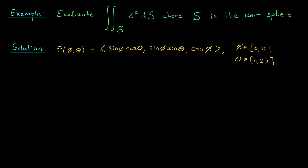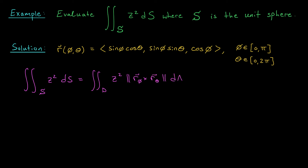According to our definition, this surface integral of z² over S is given by the double integral over all possible values of our parameters φ and θ, of our function z² times the norm of r_φ cross r_θ, dA. I can't compute this integral until I know this norm, so we need to differentiate the parametrization with respect to φ and θ, compute the cross product, and compute the norm of that cross product.